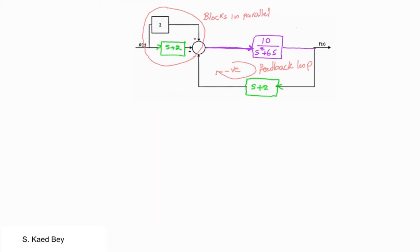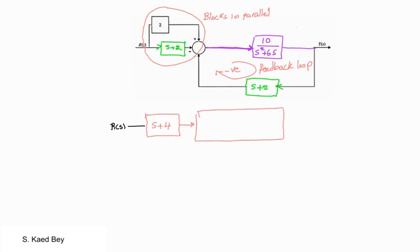Simplifying those, we get the following. We then end up with two blocks in series, and sorting this out, we will get the first part of the output Y when the measurement noise is set to zero.